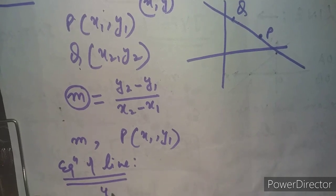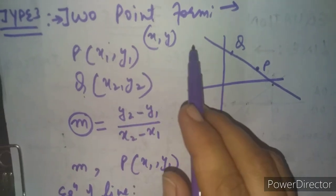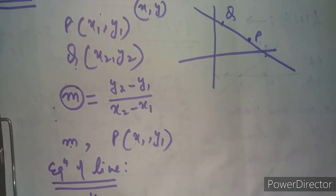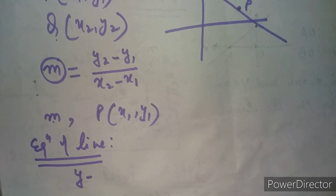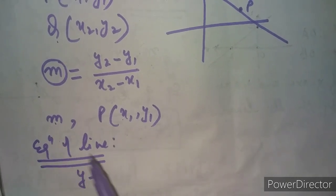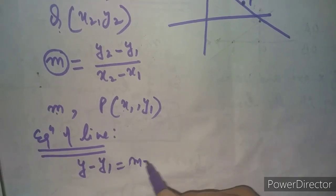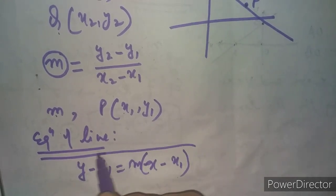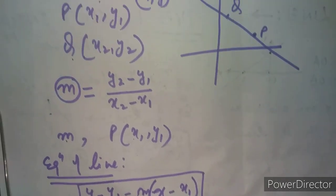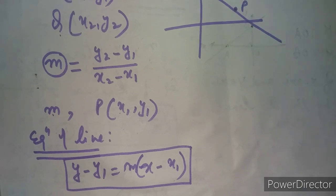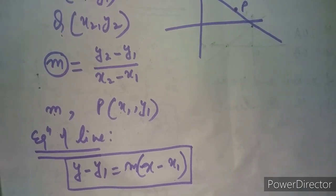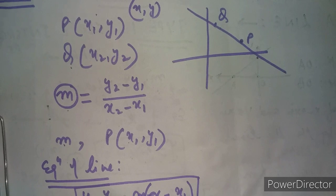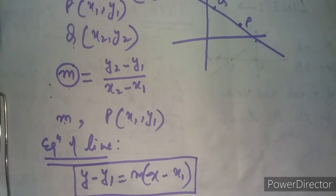The equation of the line in this case will be the same, because the two-point form has actually become the point-slope form. It has been transformed into the second form. So the equation will be: y − y₁ = m(x − x₁). Type three and type two are interchangeable — we just need to first convert x₁y₁ and x₂y₂ into the slope m, and then use the point-slope formula.